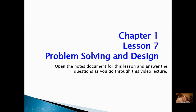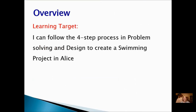Lesson 7 of Chapter 1 is the last programming assignment you're going to be working on in this chapter of ALICE. It's your chance to demonstrate what you've learned and to practice doing the four-step process on your own. You're still going to use the notes document to document the four-step process for this lesson. So open that now if you haven't done so already and put your name in the header. Our learning target for this assignment is to follow the four-step process in problem solving and design to create a swimming project in ALICE.